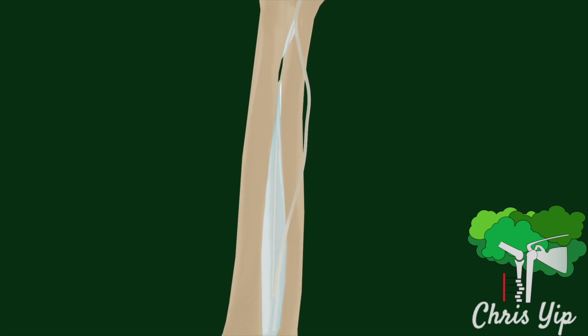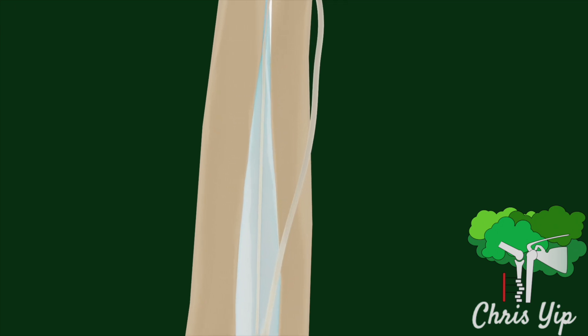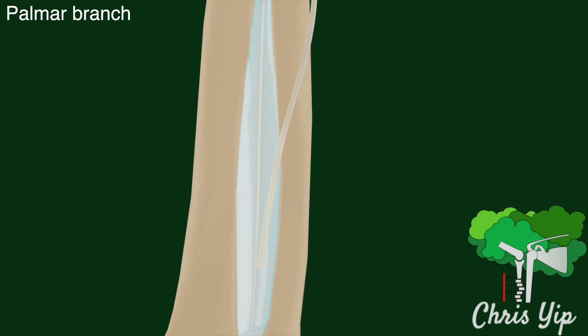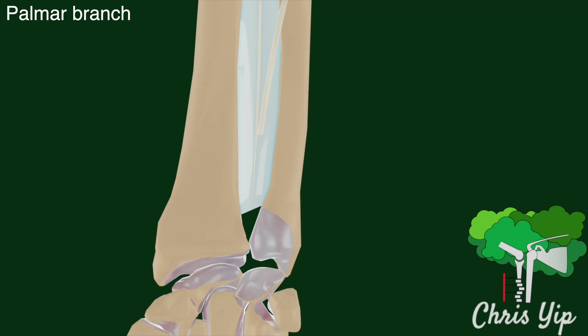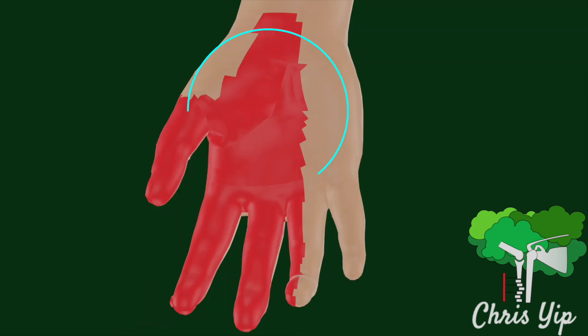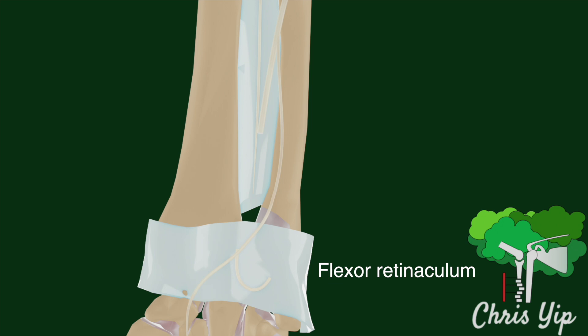As the median nerve travels down the wrist, a sensory branch called the palmar branch exits proximal to the wrist to supply the skin in the palm. It does not travel under the flexor retinaculum.